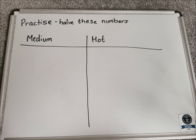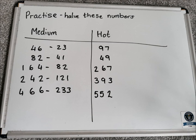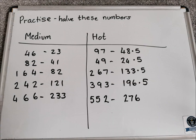Let's have a look at some practice for halving. Medium keeps to even numbers so you don't need to worry about decimals. Hot takes it to the next level with decimal numbers and trickier examples. Pause the video and have a try. Medium answers: 23, 41, 82, 121, and 233. Hot answers: 48.5, 24.5, 133.5, 196.5, and 276.